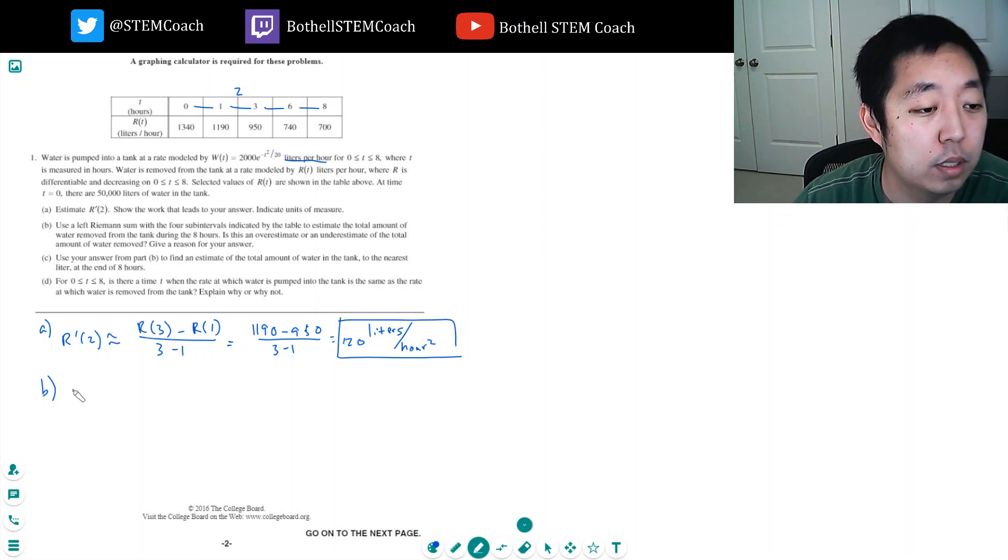My Riemann sum looks like 1340 times (1 minus 0) plus 1190 times (3 minus 1) plus 950 times (6 minus 3) plus 740 times (8 minus 6). Basically, this is the height of the rectangle times the width of the rectangle.